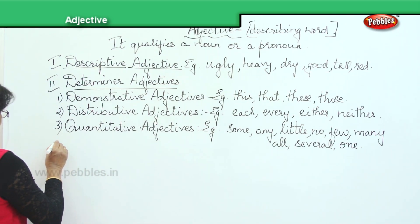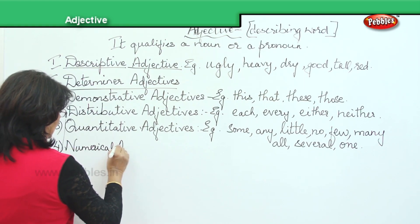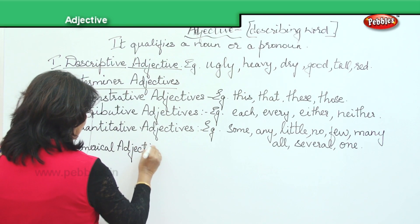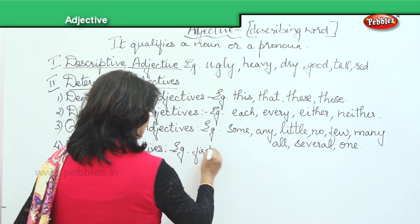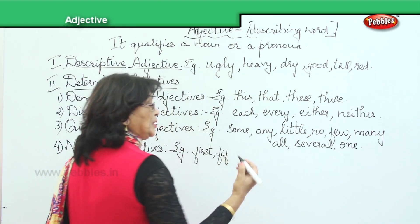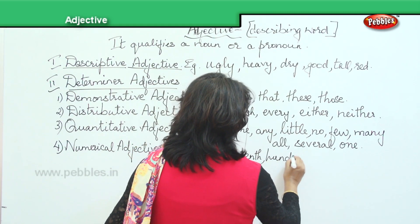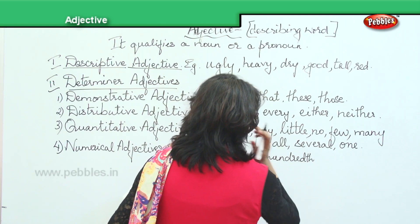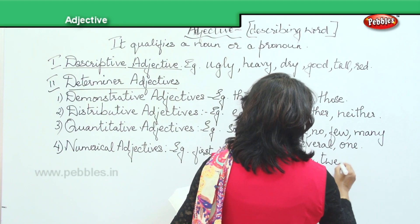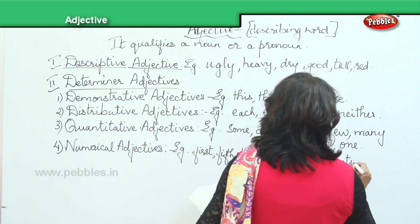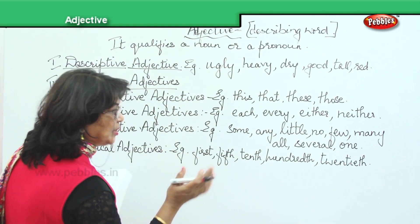Numerical adjectives — these are nothing but ordinal numbers like first, fifth, tenth, hundredth, and so on. Anything to do with numbers — for example, 'We are in the twentieth century.' So first, fifth, tenth, hundredth, twentieth — any number becomes a numerical adjective.